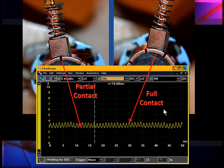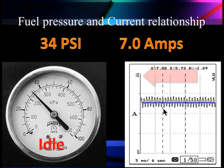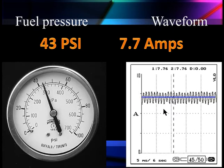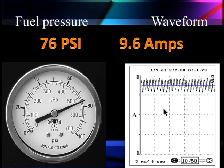Looking at the amperage on a 10-amp scale, I'm at idle running 34 psi and drawing 7 amps. If I raise the pressure, it takes more amps — the pump has to work harder and needs more amperage. As I go up to 76 psi, it's up to 9.6 amps, working much harder to deliver this extra pressure. Running twice the pressure requires more amps. Looking at fuel pressure versus RPM: at 34 psi I'm running 8,462 RPM; at 43 psi I'm running 8,075 RPM; at 76 psi I'm down to 7,398 RPM.